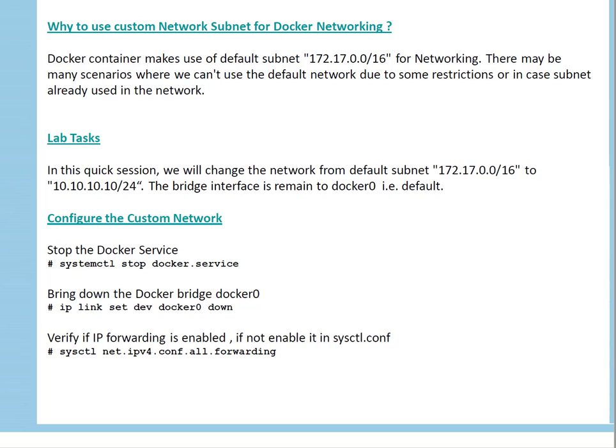In this lab, we are going to modify the default subnet 172.17.0.0/16 to, for example, 10.10.10.0/24. The bridge interface is going to remain the same, which is docker0. First, we have to configure the custom network. To do so, we stop the Docker service first, then bring down the docker0 interface, which is a bridge.